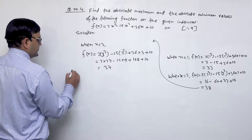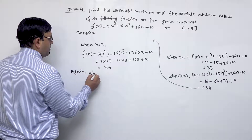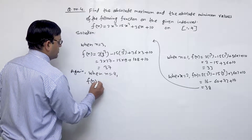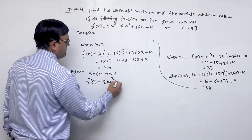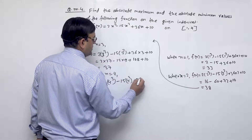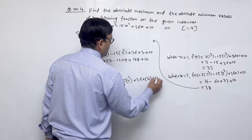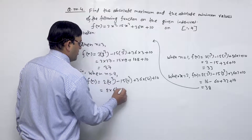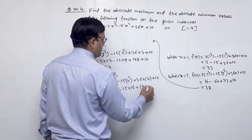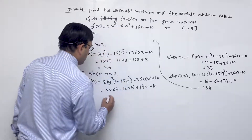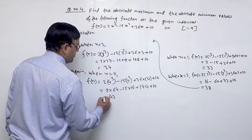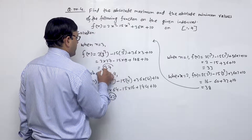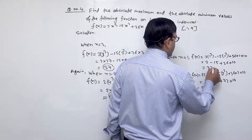When x = 4, f(4) = 2(4)³ - 15(4)² + 36(4) + 10 = 128 - 240 + 144 + 10 = 42. Now comparing the values: 42, 37, 38, and 33.